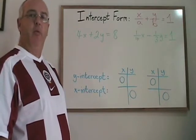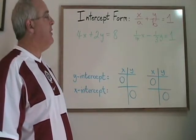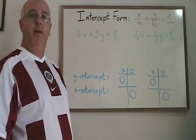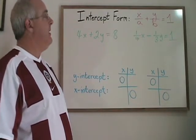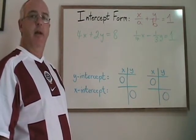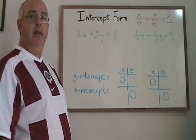Intercept form is a form in which we can write a straight line equation that allows us to very quickly find both the x-intercept and y-intercept for the line. Intercept form looks like this: x over a plus y over b equals 1. Neither a nor b can be equal to 0.